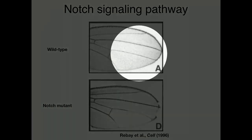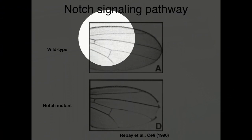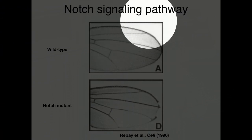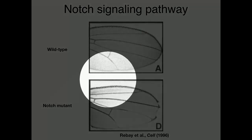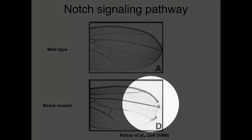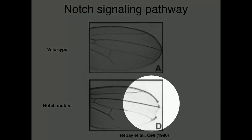One of the other phenotypes I showed you is called 'notch.' Normally a fly wing has a nice smooth margin, but notch mutants have wings with a chunk taken out of them at the end. So the gene became known as notch because of this fly phenotype. And again, there's a human notch, and human notch is involved in human diseases such as cancer.